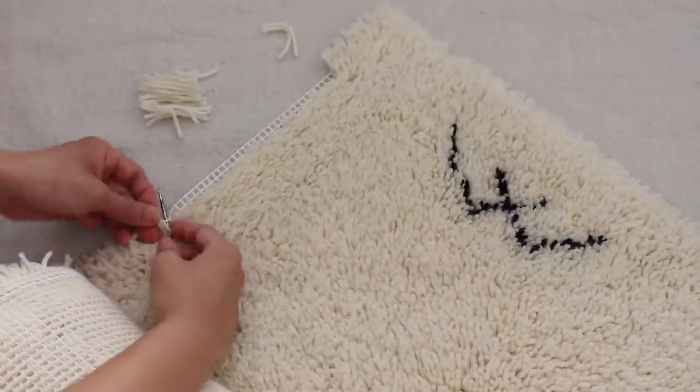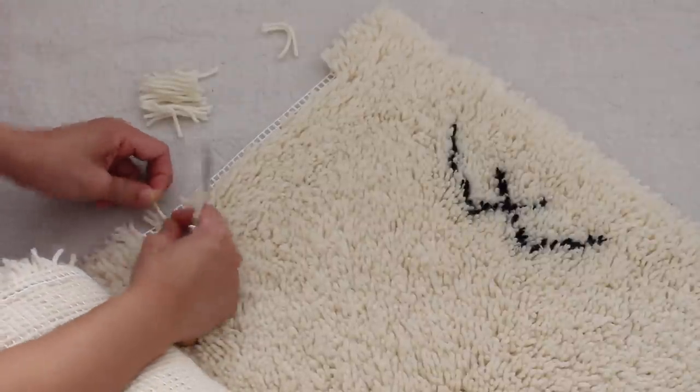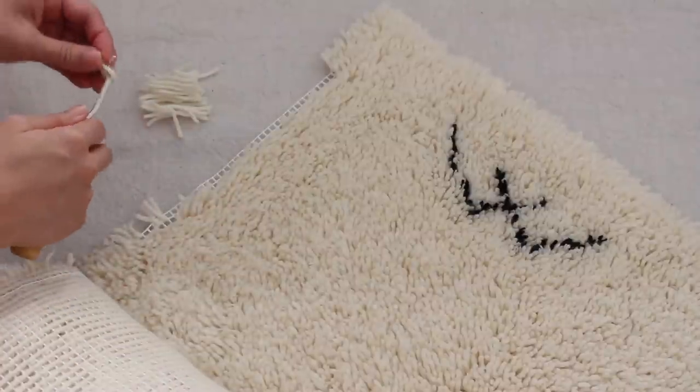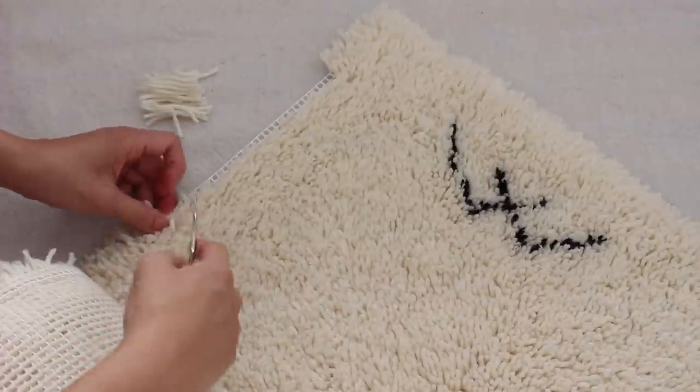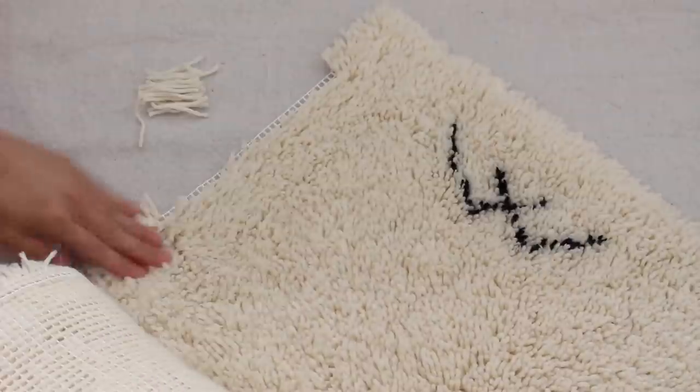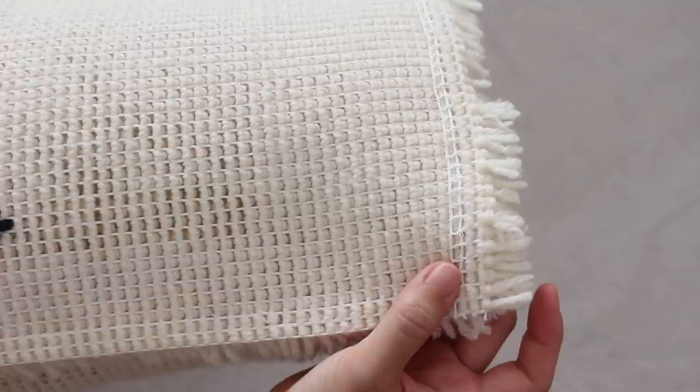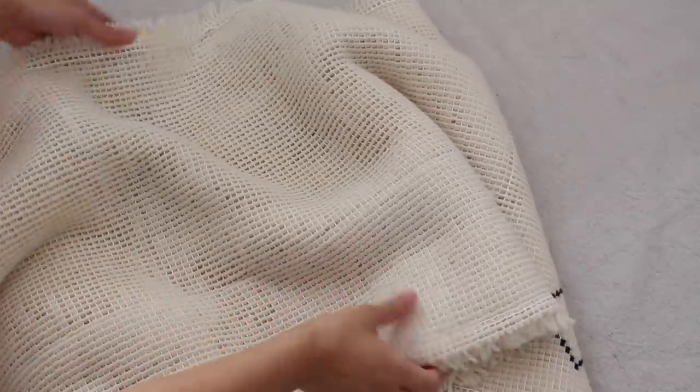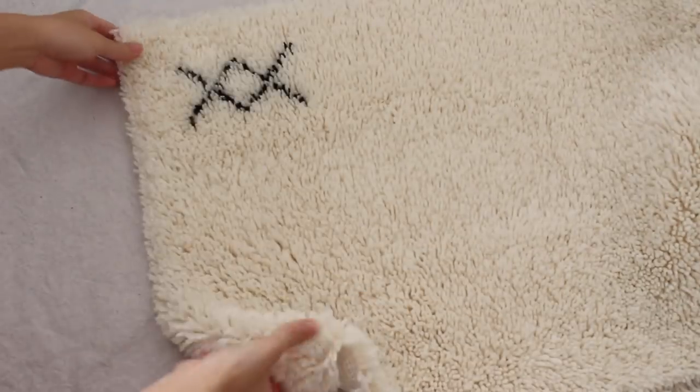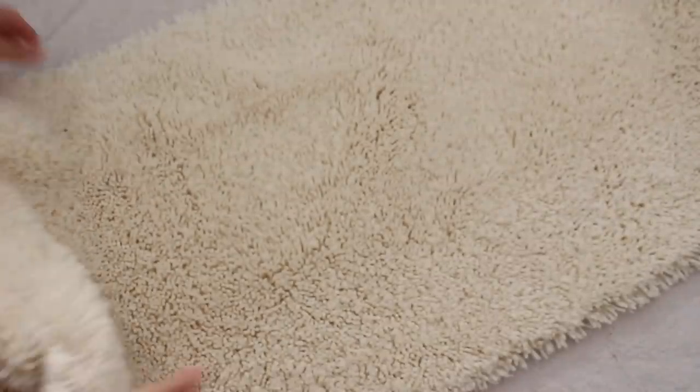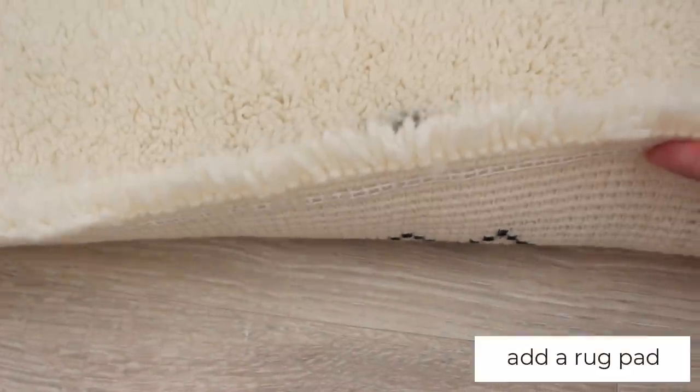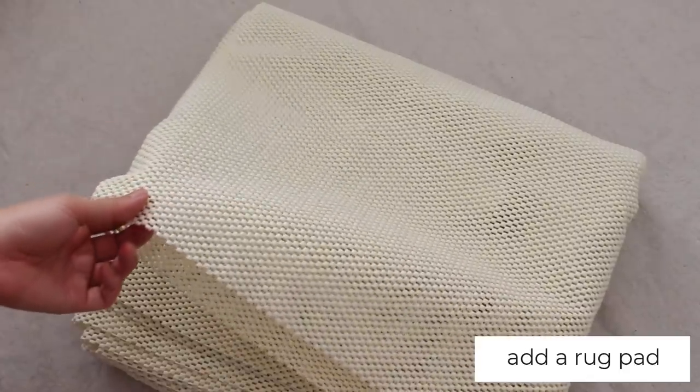Next, I latch hooked the 2 rows around all the sides. I ended up using 9 rolls of yarn. You definitely should add a rug pad or some kind of grip for this so that it doesn't slide.